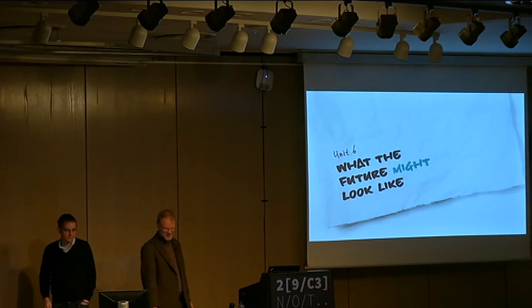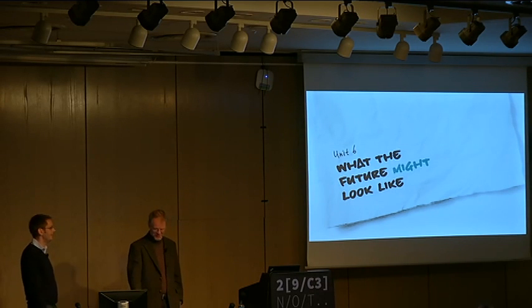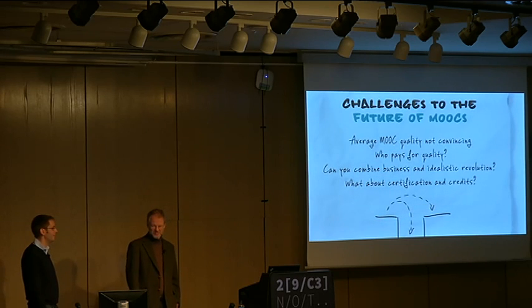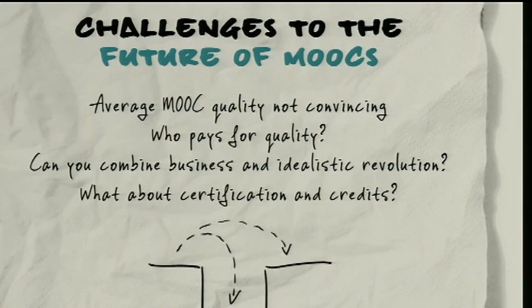So how do we proceed from here? Futurism. We already mentioned these challenges — they're compiled together now. The average MOOC, if you really look into it, is not convincing in terms of quality. But then again, the average university lecturer would also not be convincing in terms of quality, and nobody looks into the standard university lecture. We need to improve quality — but who pays for that quality? Big question.